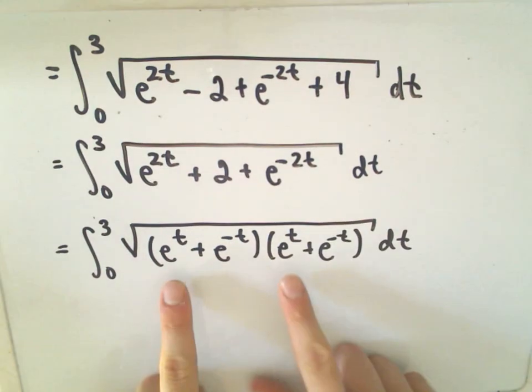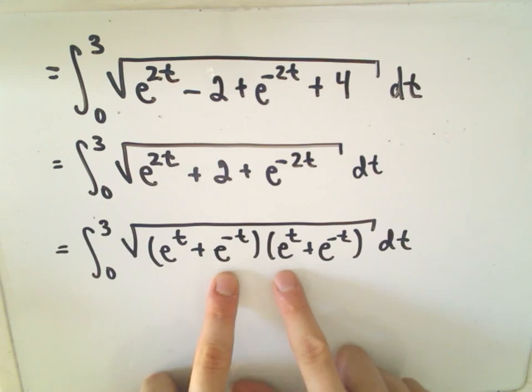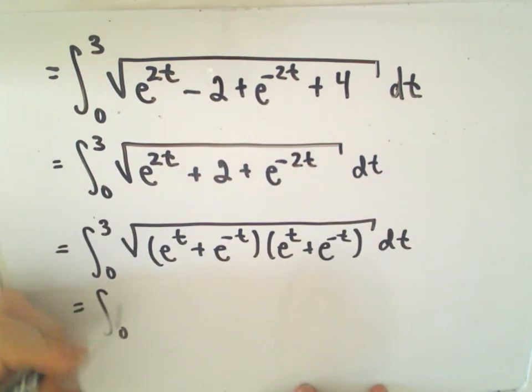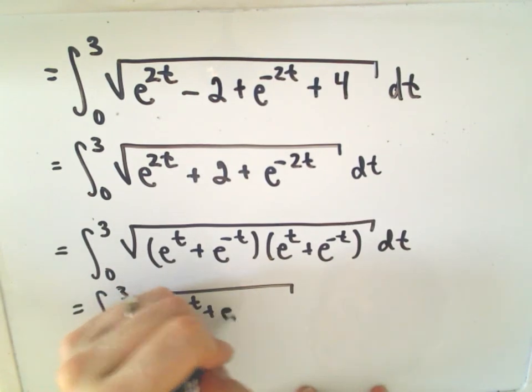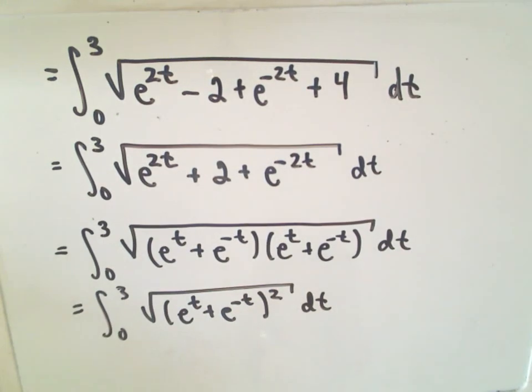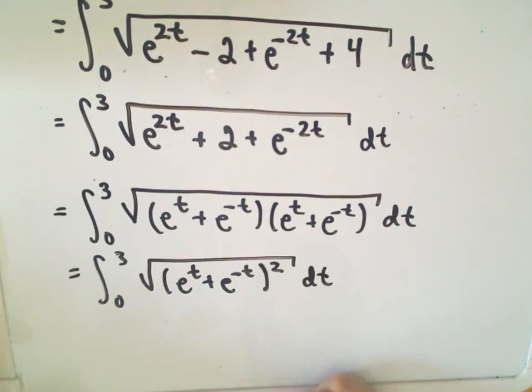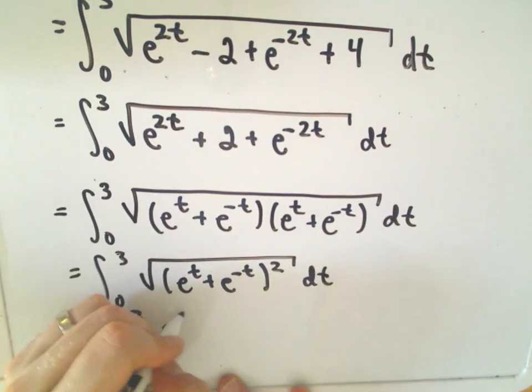Because again, if we foil it out, we'll get our e to the 2t. We'll get our pluses 1, plus 1 on the middle, which will give us plus 2. And then we'll get our plus e to the negative 2t. Well, that's the same thing now as e to the t plus e to the negative t quantity squared dt. And if you take the square root of a quantity squared, we just get what's underneath the square root.